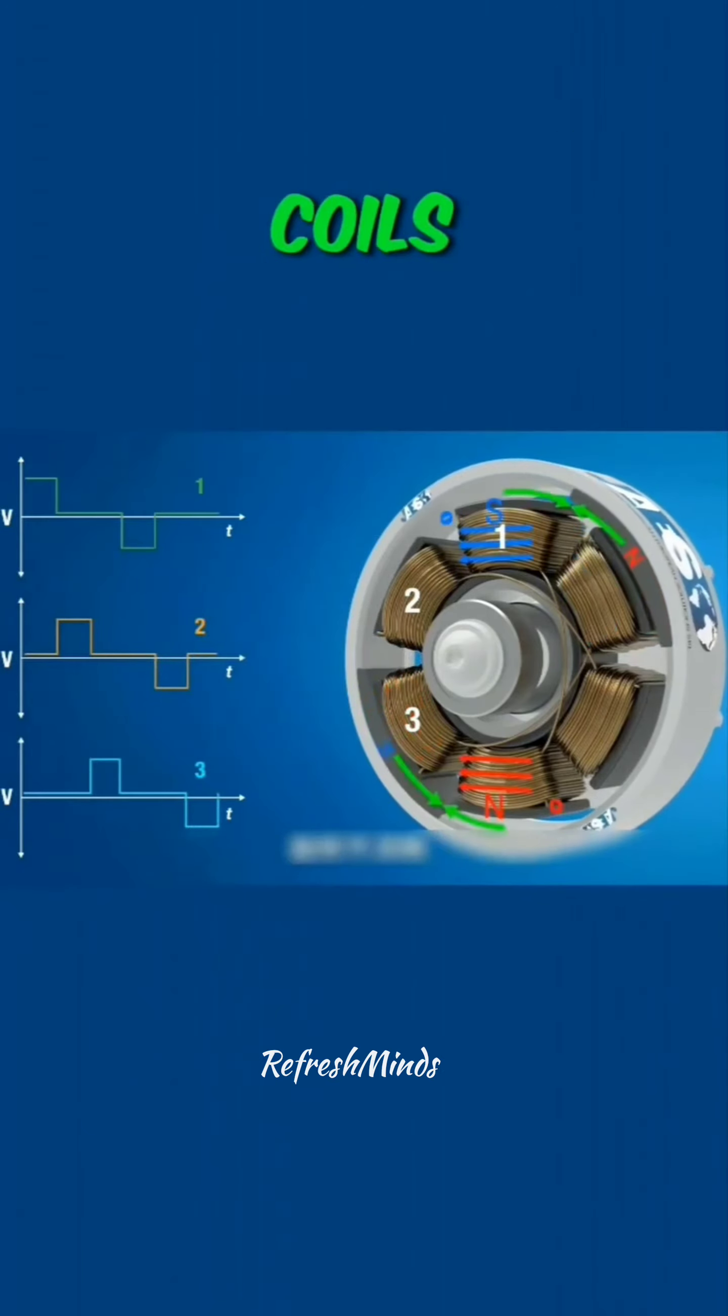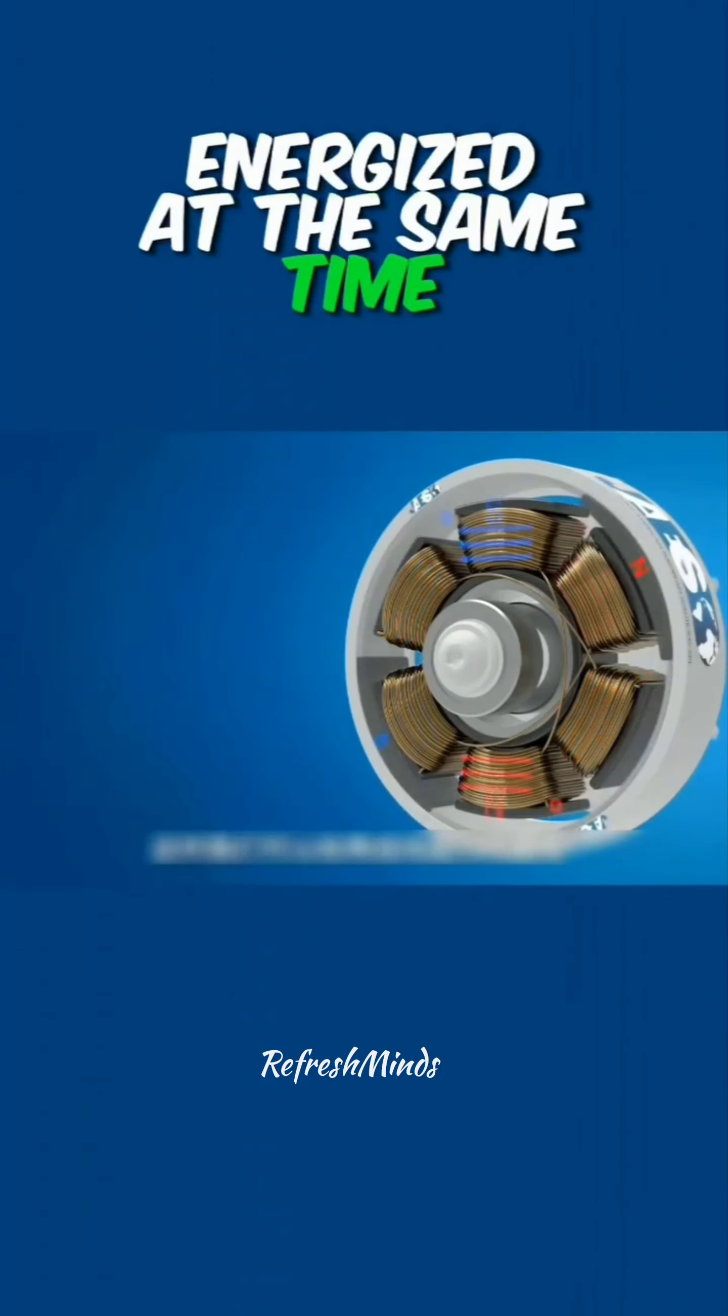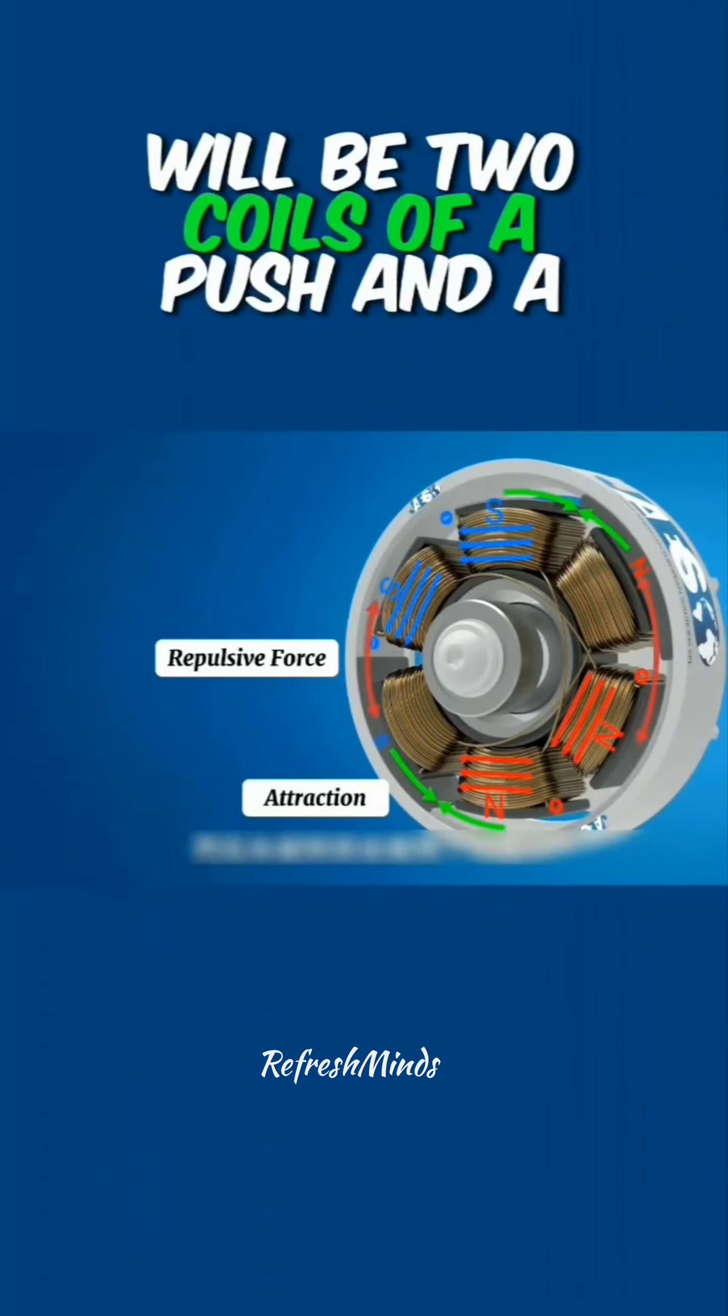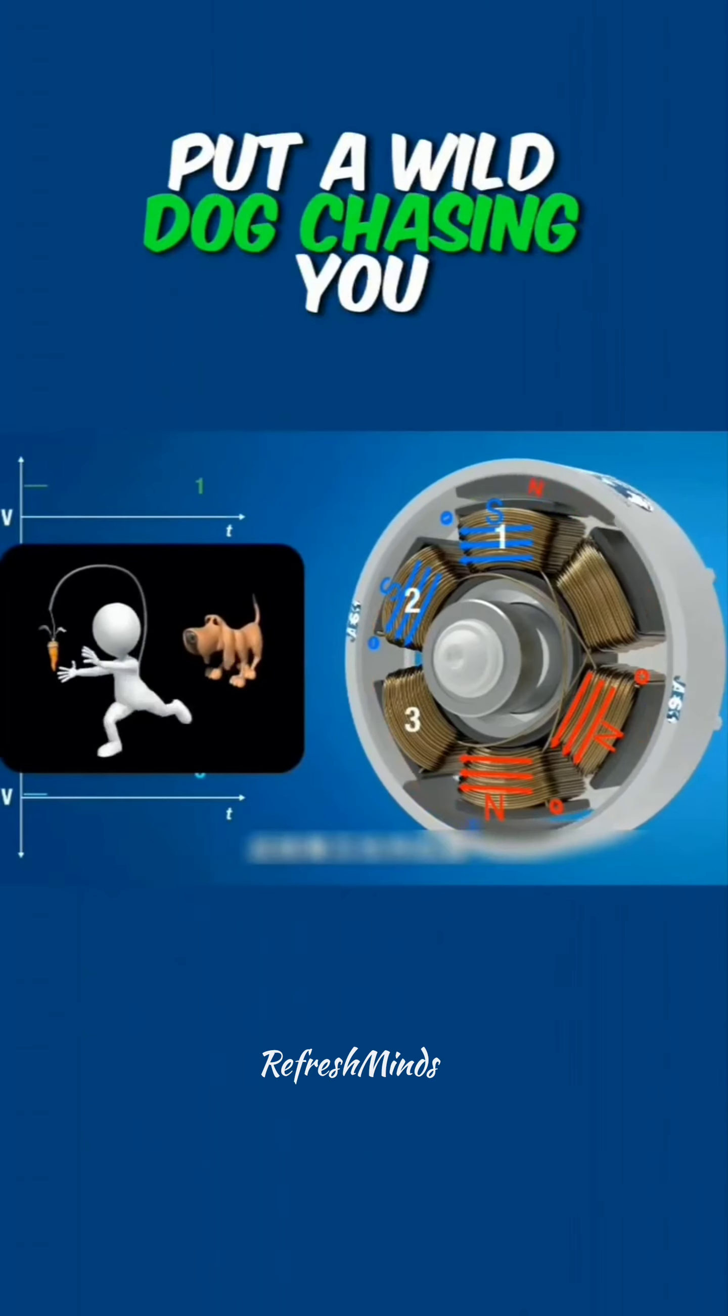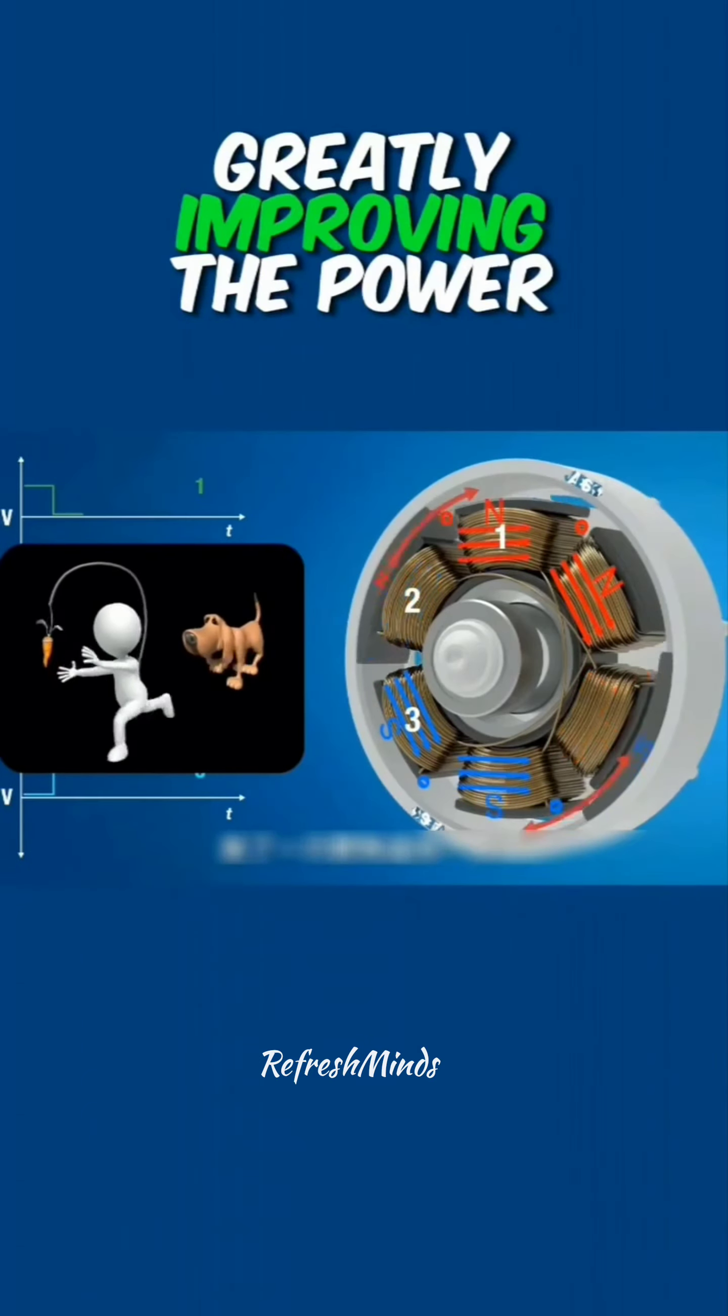Then we can give two sets of coils energized at the same time, and then the permanent magnet will be two coils of a push and a pull, which is like again behind you put a wild dog chasing you, greatly improving the power of the motor.